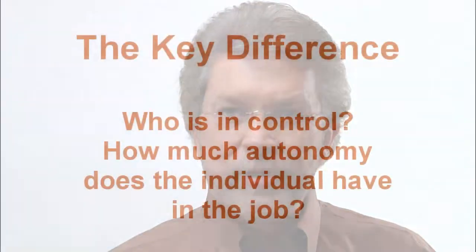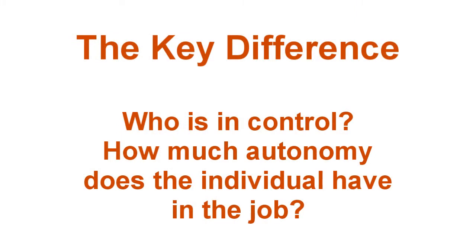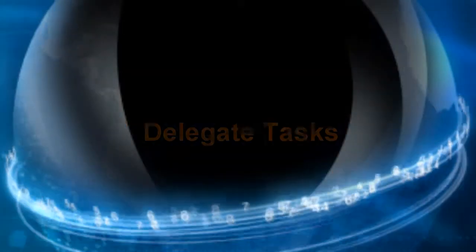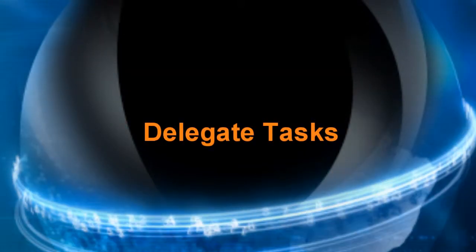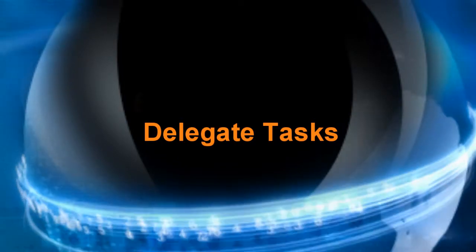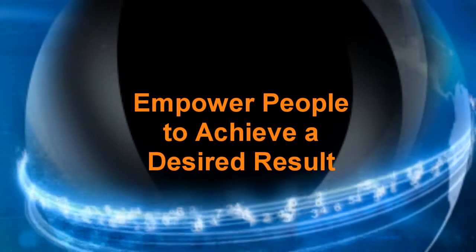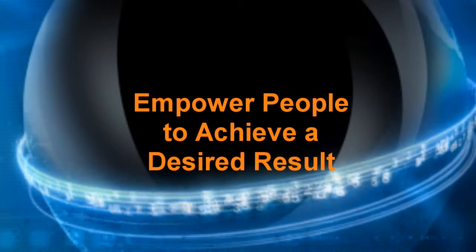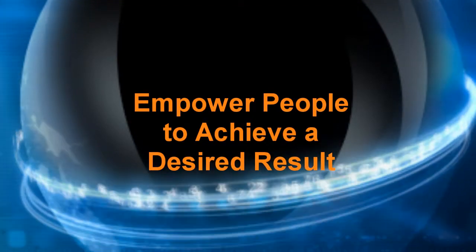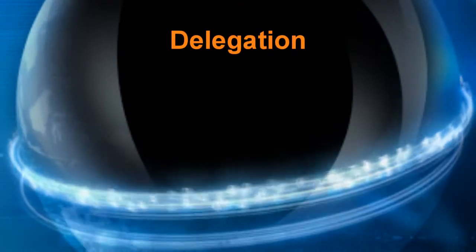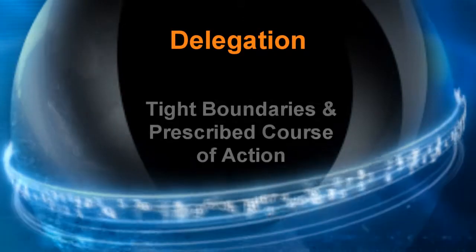The key difference between delegation and empowerment comes down to one important factor: who is in control? Or, put another way, how much autonomy does the individual have in the job? Here's an easy way to think about it: you delegate tasks; you empower people to exercise control to achieve a desired result. Let's break down the differences in more detail.